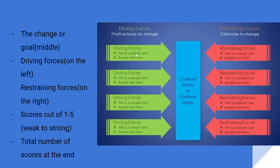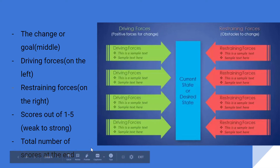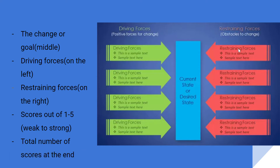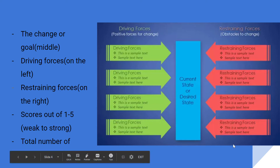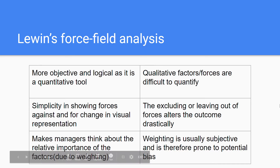You write down all the forces in these arrows, and for each force you score it from one to five — one being the weakest and five being the strongest. At the end of the analysis, you add up all the points on the driving forces side and all the points on the restraining forces side to get a total score.